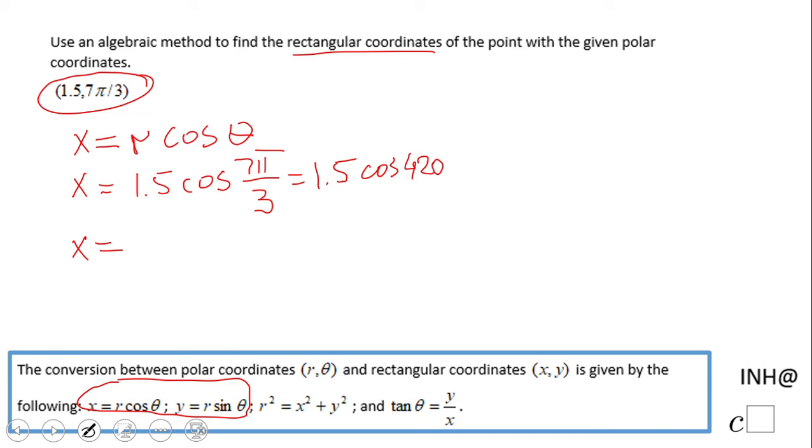I end up with 0.75. And again, some of you may say I don't need a calculator because I can do 7π over 3 - that is not a bad angle to do using the unit circle. That is the x value. And how we're going to do the y value: we have the other formula, y equals r sine theta.